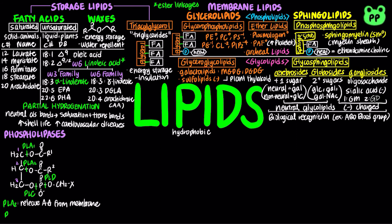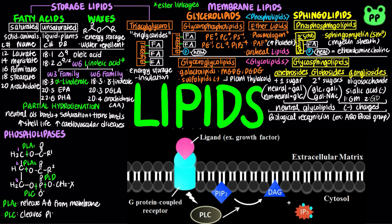In the signal transduction pathway involving protein kinase C, Phospholipase C is the primary effector that cleaves membrane phosphatidylinositol-4,5-bisphosphate into inositol triphosphate (IP3) and diacylglycerol. IP3 then increases cytosolic concentration of calcium cations, which in turn activates protein kinase C along with diacylglycerol.